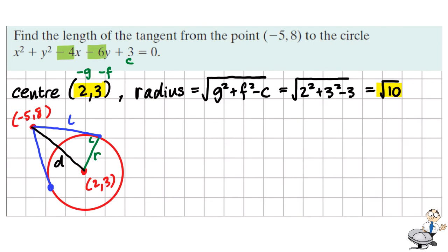This creates a right angle triangle with sides L, D and R. We know the radius. What we want to find is the distance between the two given points, because then we could use Pythagoras' theorem to work out what L is. We could use the distance formula for this.